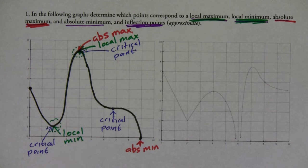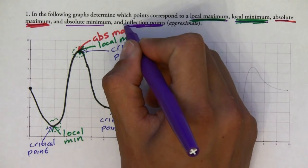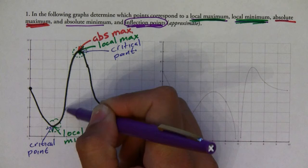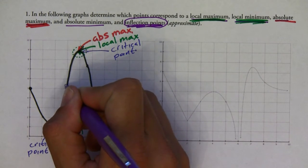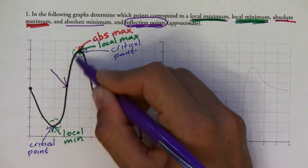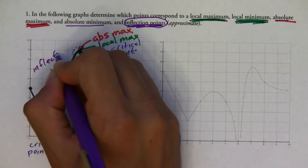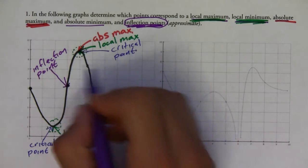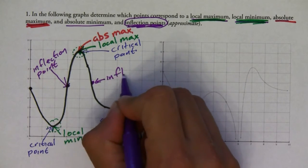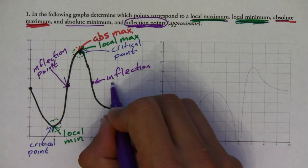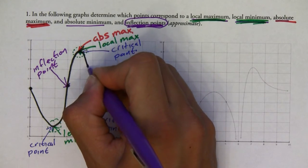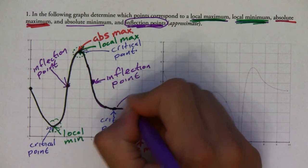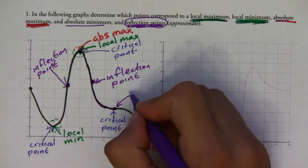Now the inflection points — remember, inflection points are where the graph changes concavity. Looking at this graph, right here it's concave up, but then somewhere around this general area the graph starts becoming concave down. So this is an inflection point. This is where the second derivative is zero or undefined — in this case it's actually zero. This is also an inflection point, because notice how it's concave down here, then right around here it becomes concave up, and then right here it becomes concave down again.